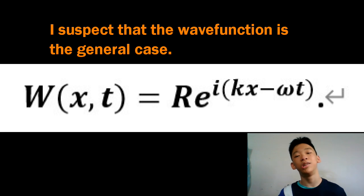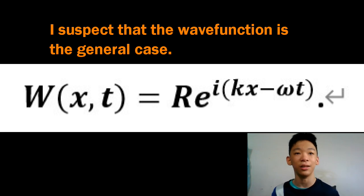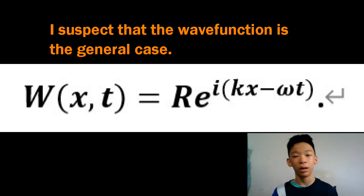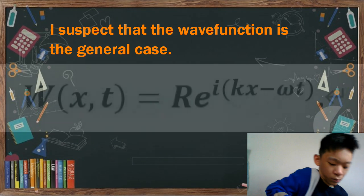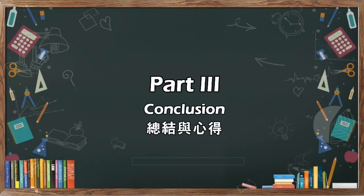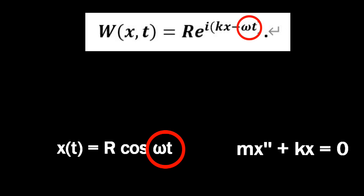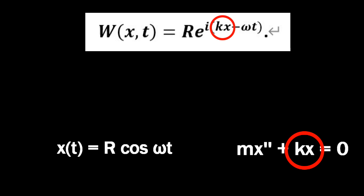The wave function appears to be a general case combining these two ideas. On a quantum level, the position, momentum, velocity, etc. of a particle is undetermined, so we need to keep track of position and time. Looking back at the wave function, omega t is related to natural frequency, which we discussed in simple harmonic motion, and kx is related to the spring coefficient from spring motion.